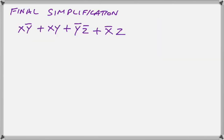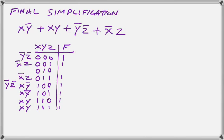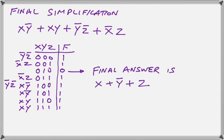Let us complete the final simplification of the second expression and we are going to do that using the truth table. So, we take the first term X Y bar and we put in the ones and then we take the next term X Y, we put in the ones. We do the same thing for Y bar Z bar and X bar Z and we are left with only one zero in the function. And that zero gives us our final answer of X or Y bar or Z.